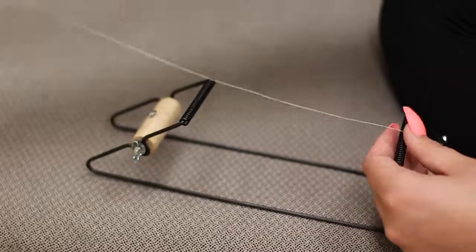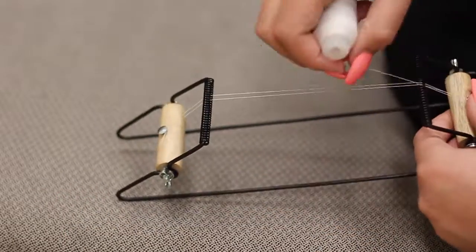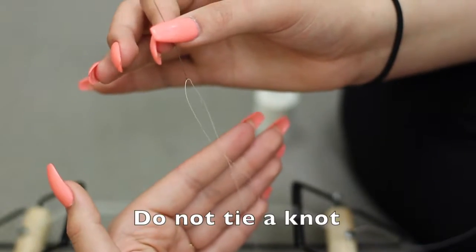First string six rows onto your loom. Knot the end twice around the notch. Thread your needle.